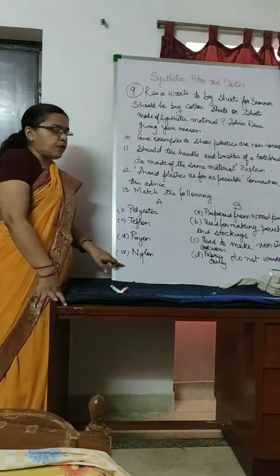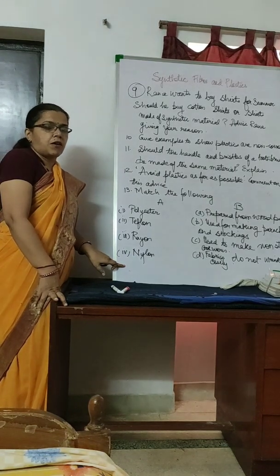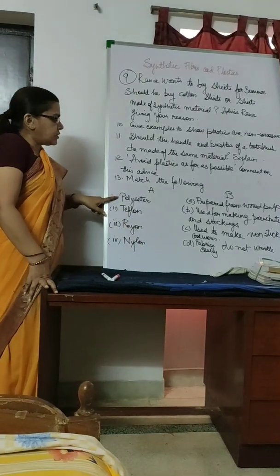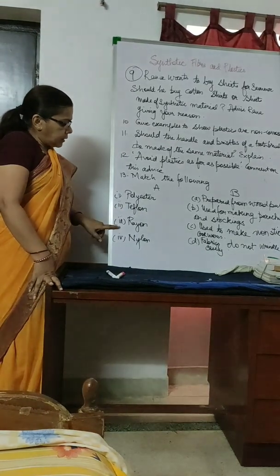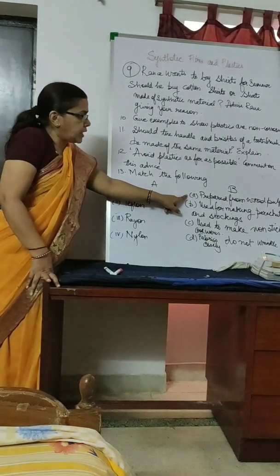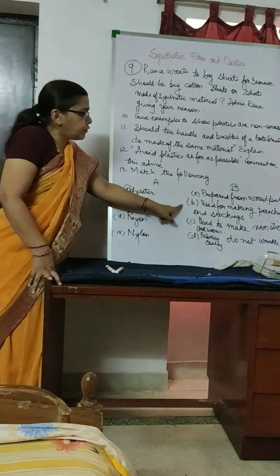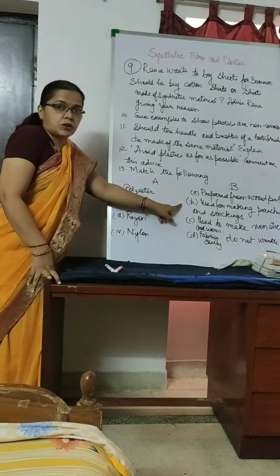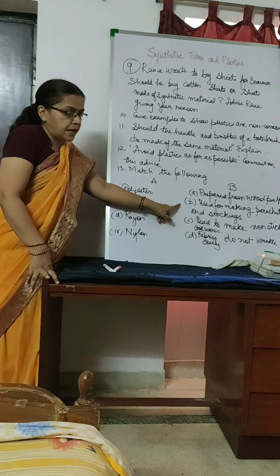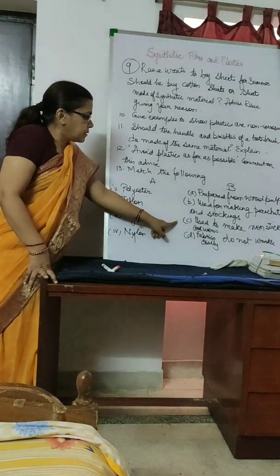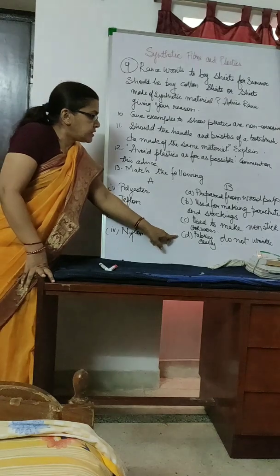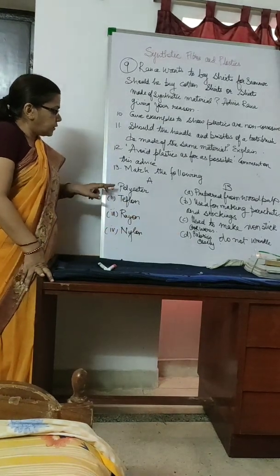Match the following: Given synthetic materials and their uses or properties — rayon is prepared from wood pulp. Nylon is used for making parachutes and stockings. Teflon is used to make non-stick cookware such as non-stick pans. Polyester is the fabric that does not wrinkle easily.